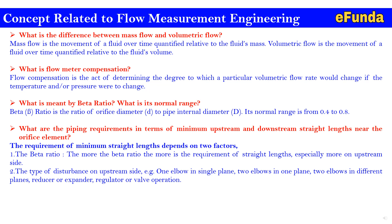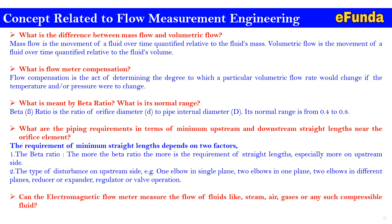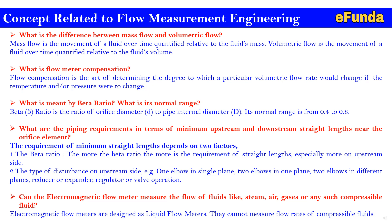These disturbances increase the upstream length requirement so as to have settled flow and get a correct reading across the orifice plate. Can an electromagnetic flow meter measure the flow of fluids like steam, air, or other compressible fluids? Electromagnetic flow meters are designed as liquid flow meters — they cannot measure flow rates of compressible fluids. This covers the typical concepts related to flow measurement.